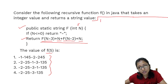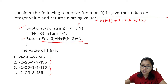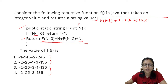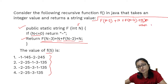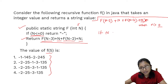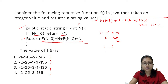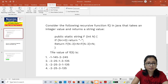This function evaluates f(n-3) + n + f(n-2) + n every time when n is greater than 0. Otherwise, if n is less than or equal to 0 — meaning if n is 0 or any negative number — then it is returning a hyphen ('-').